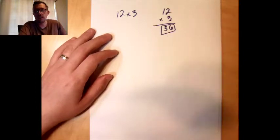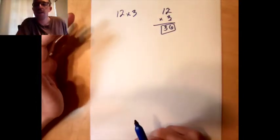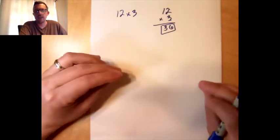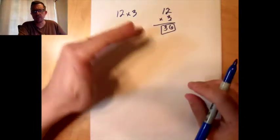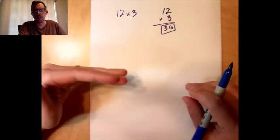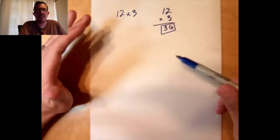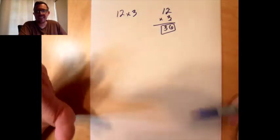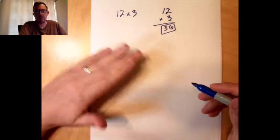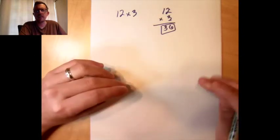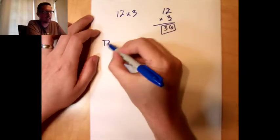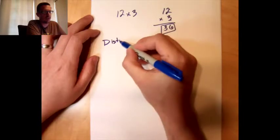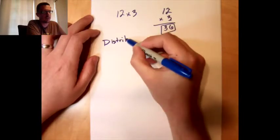This is a really nice, easy way to multiply numbers, and I want to show you a slightly different way that you can multiply a problem like this without using the traditional stack-and-multiply method. Let's take the exact same problem, 12 times 3, but set it up using something that we in mathematics call the distributive property.